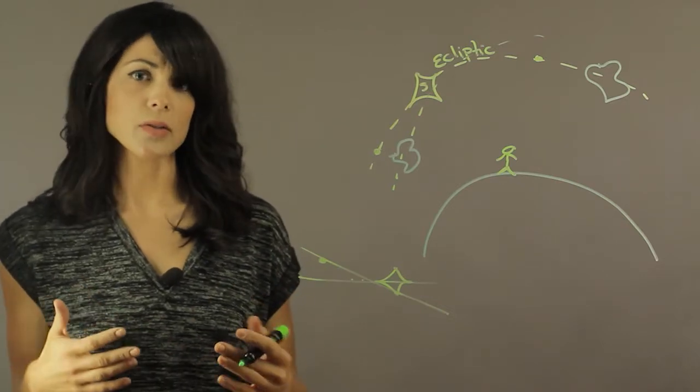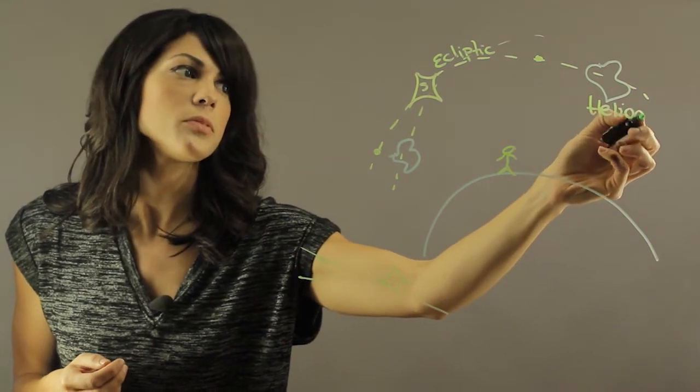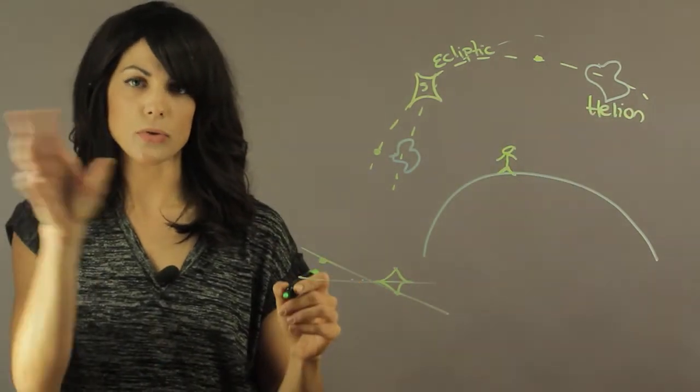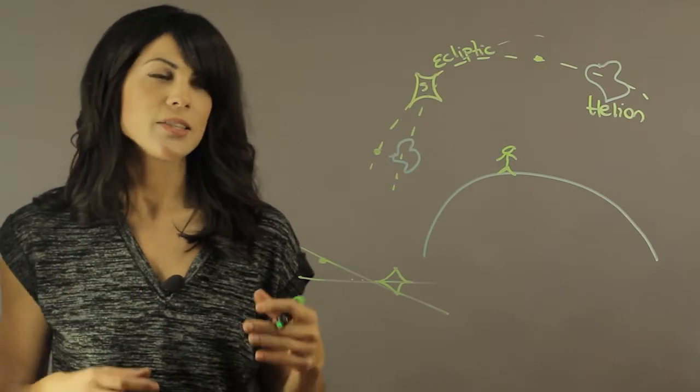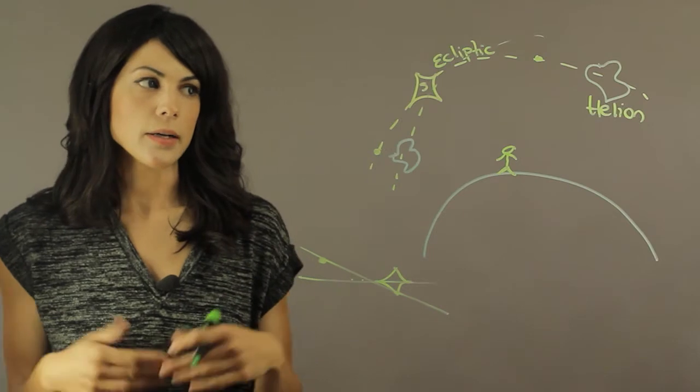So now let's talk about some of the sources. Well this one is the helium and it comes directly from where the Sun is, so it comes directly from the ecliptic. Generally these are so small they're not visible but they are detected by telescopes.